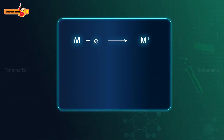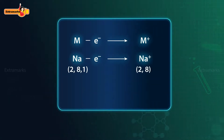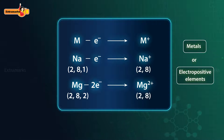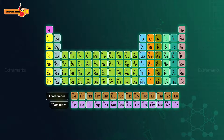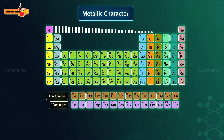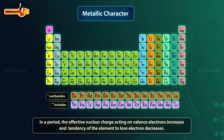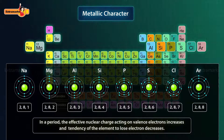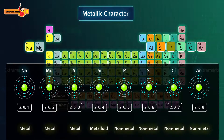The elements which have a tendency to lose electrons and form positive ions are called metals or electropositive elements. On moving from left to right in a period, the metallic character decreases. In a period, the number of valence electrons increases from left to right, so the effective nuclear charge acting on valence electrons increases and hence the tendency to lose electrons decreases. Thus, the metallic character decreases across a period.